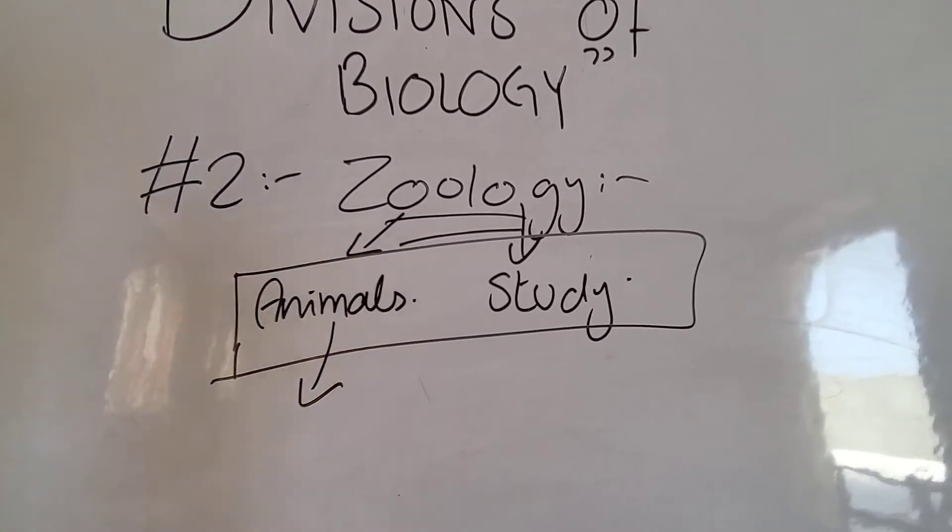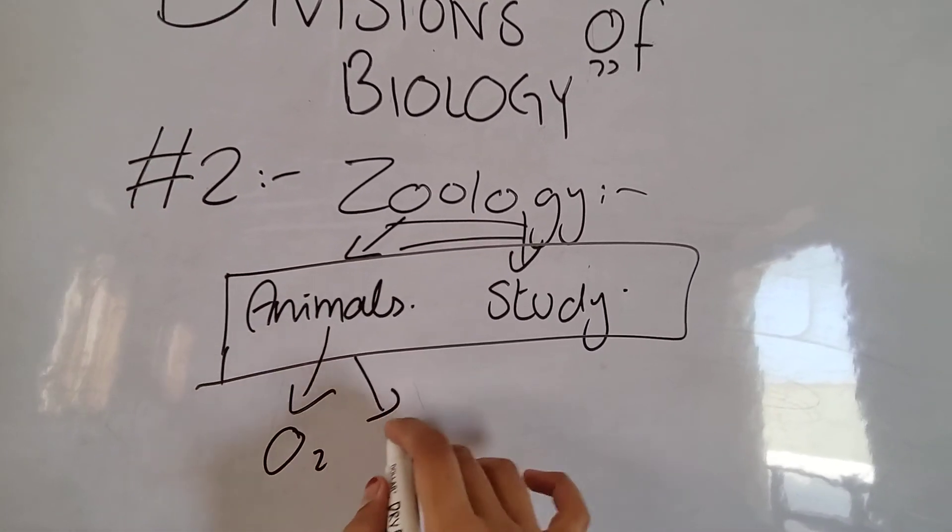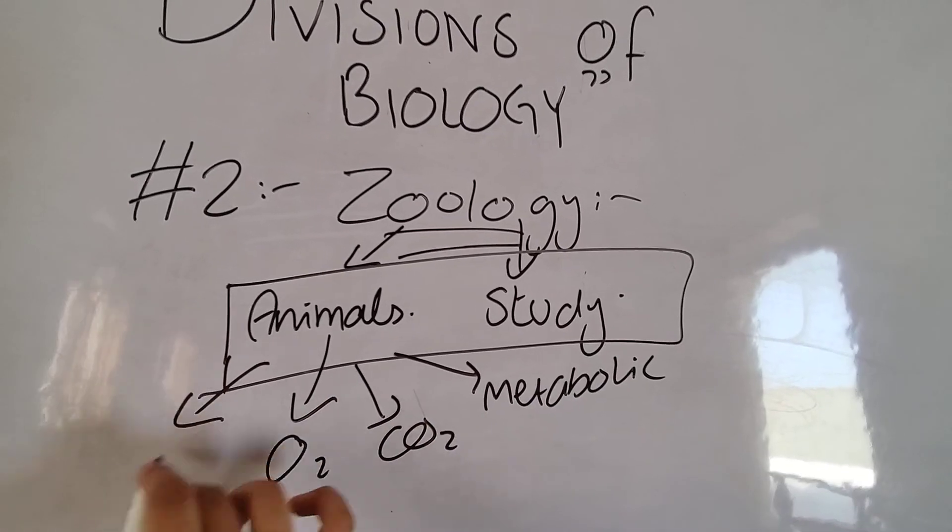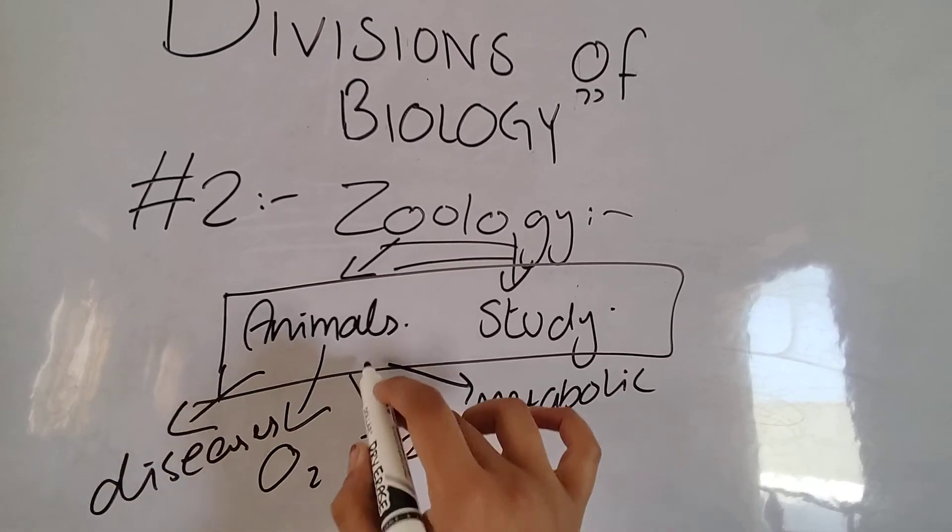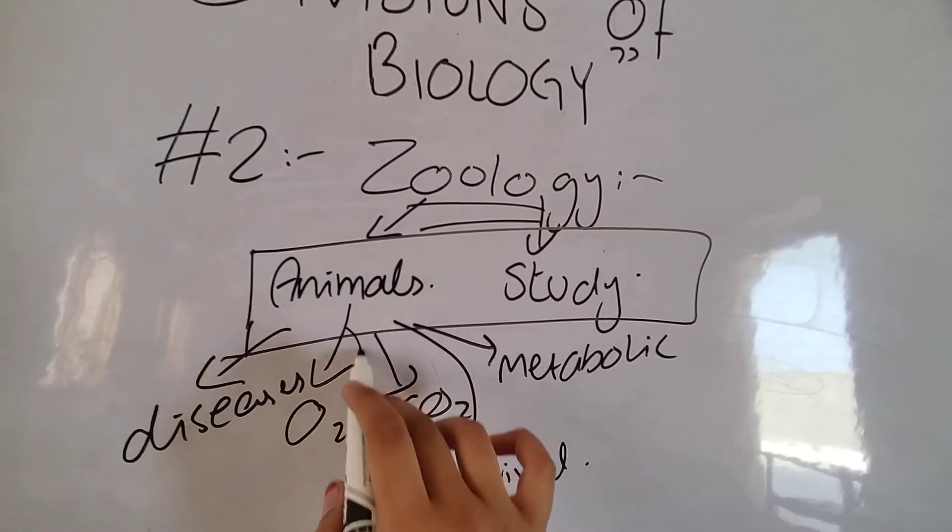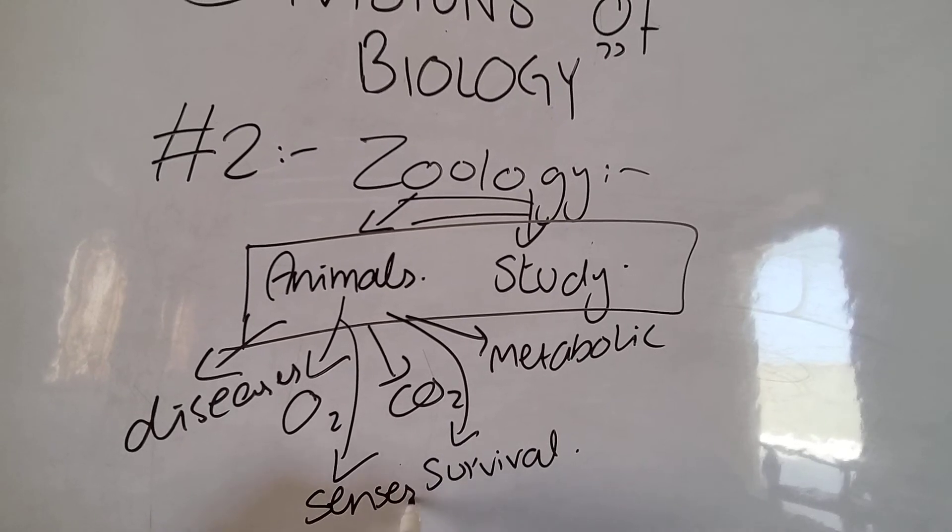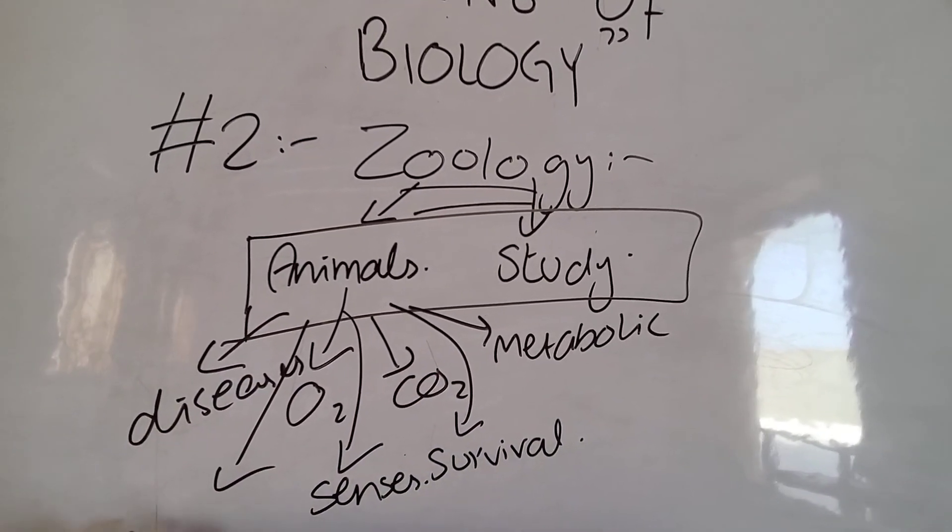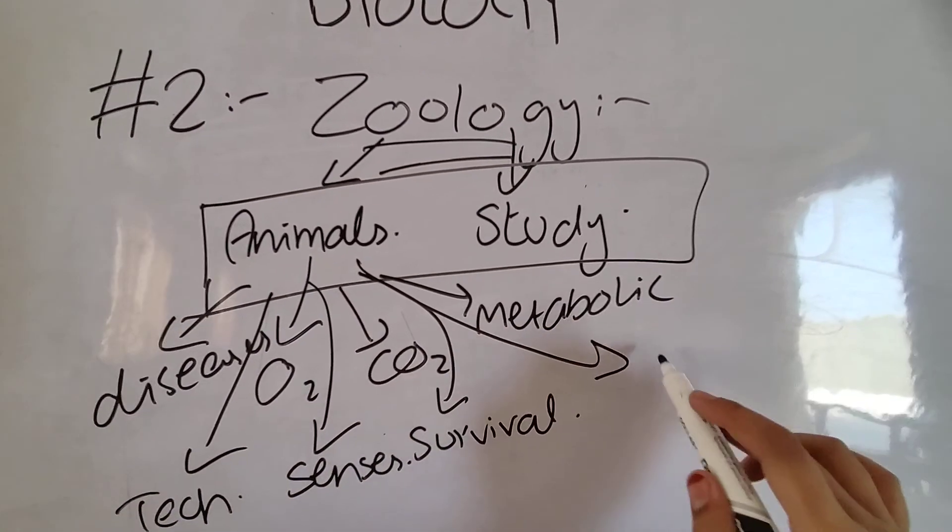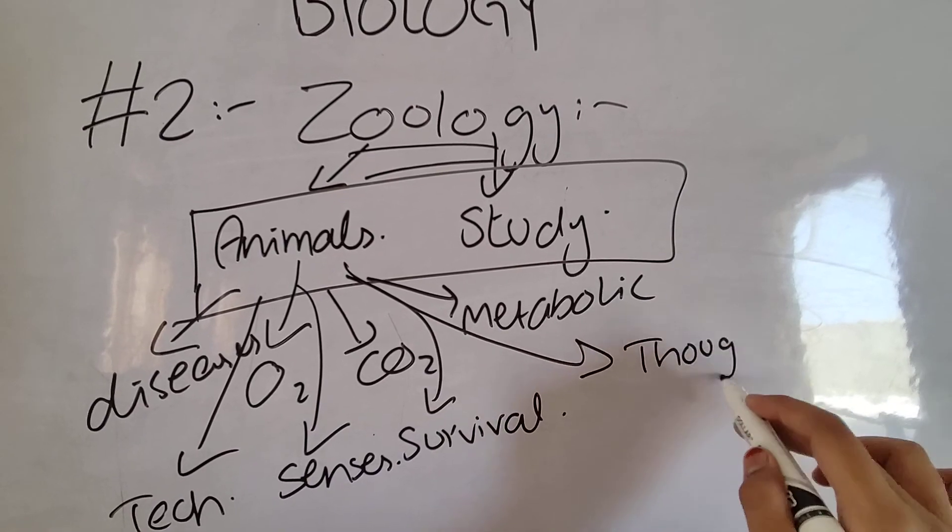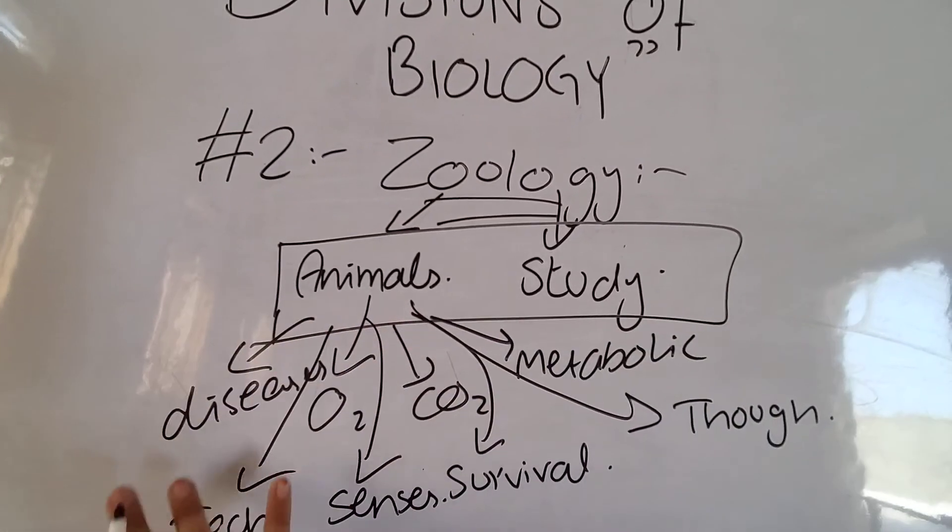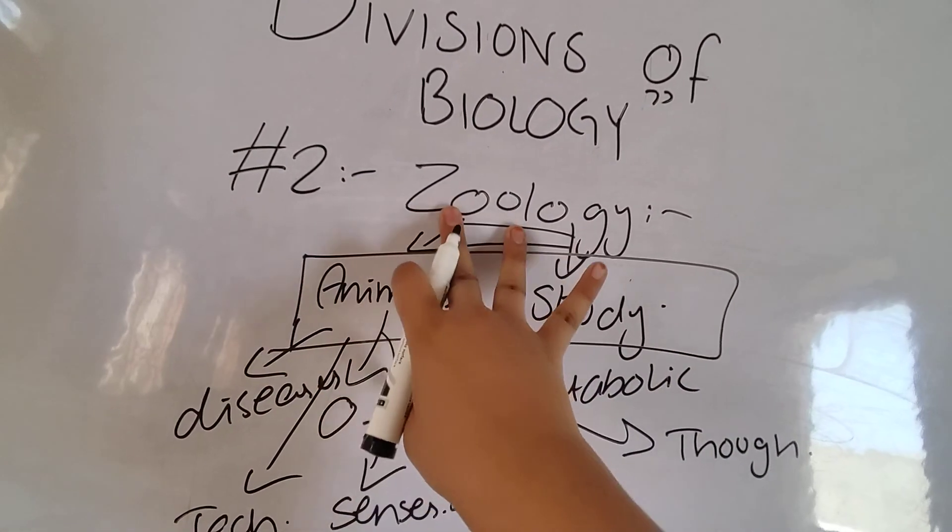Guys, what is Zoology about? Like we breathe, we take oxygen, we release carbon dioxide. We have metabolic activities, we have diseases, we have survival habits, we have senses, we have technology, we have thought or reasoning or thinking, we have scientists, we have researchers. So all these things are going to be studied in this term Zoology.